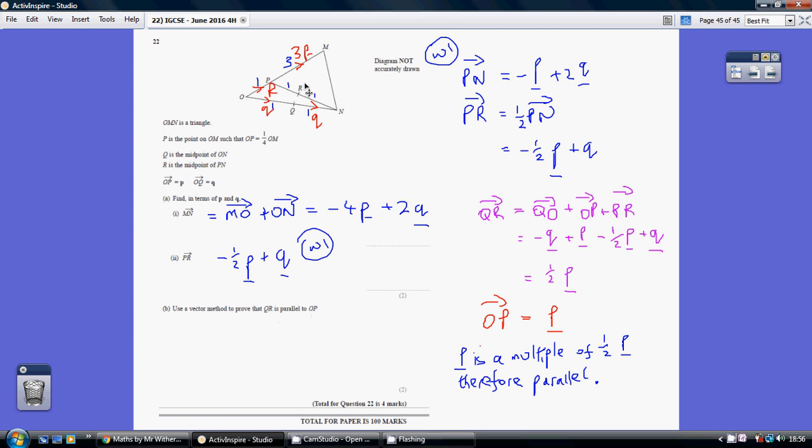So Q to R—I'm going to go this way: Q to O, O to P, and P to R. It's always best to include some earlier workings, and we've just worked out what PR is. So even though it's quite long-winded—it's one, two, three vectors—it's better to go Q to O, O to P, and P to R than Q to N and N to R, I reckon.